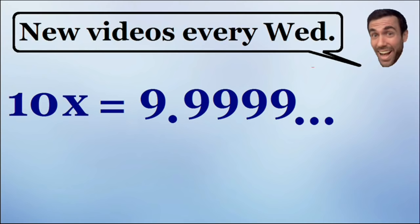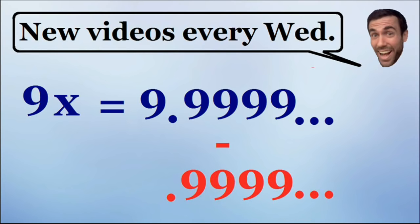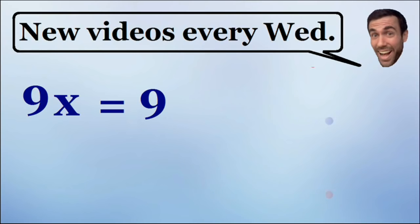Now if we subtract x from both sides of the equation, on the left hand side we have 10x minus x which is equal to 9x, and on the right hand side we have 9.999... repeating minus x. And if you remember, x is equal to 0.999... repeating, so if we substitute this into the equation, 9.999... repeating minus 0.999... repeating is equal to 9.